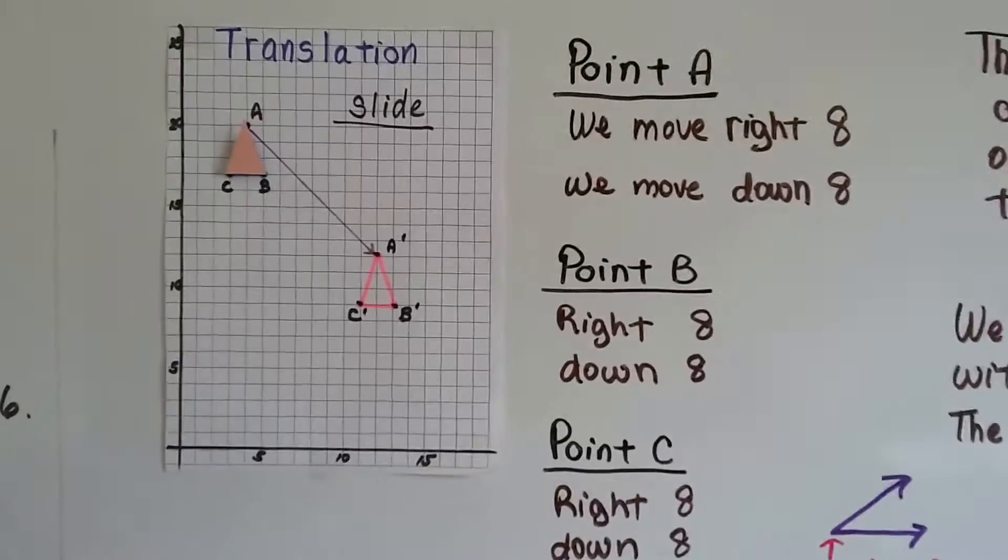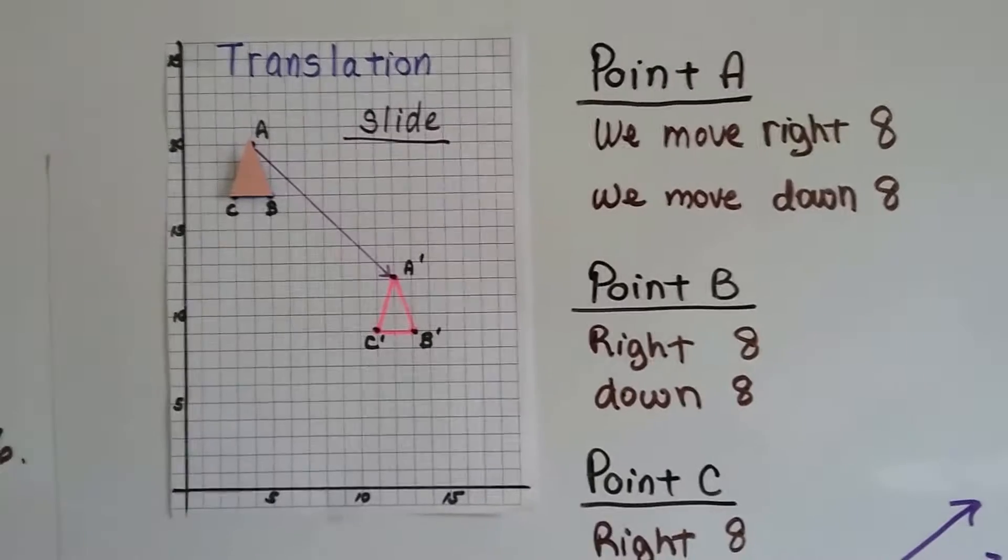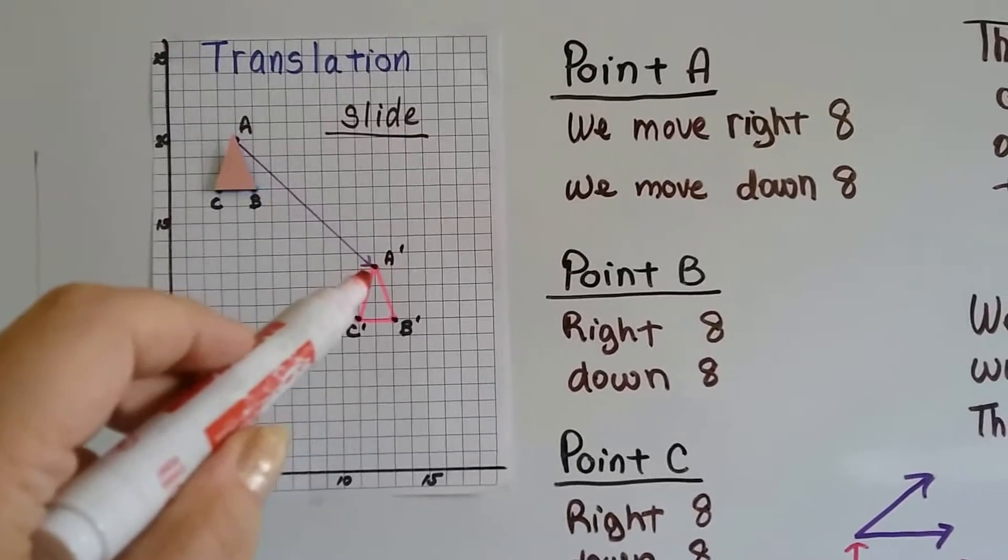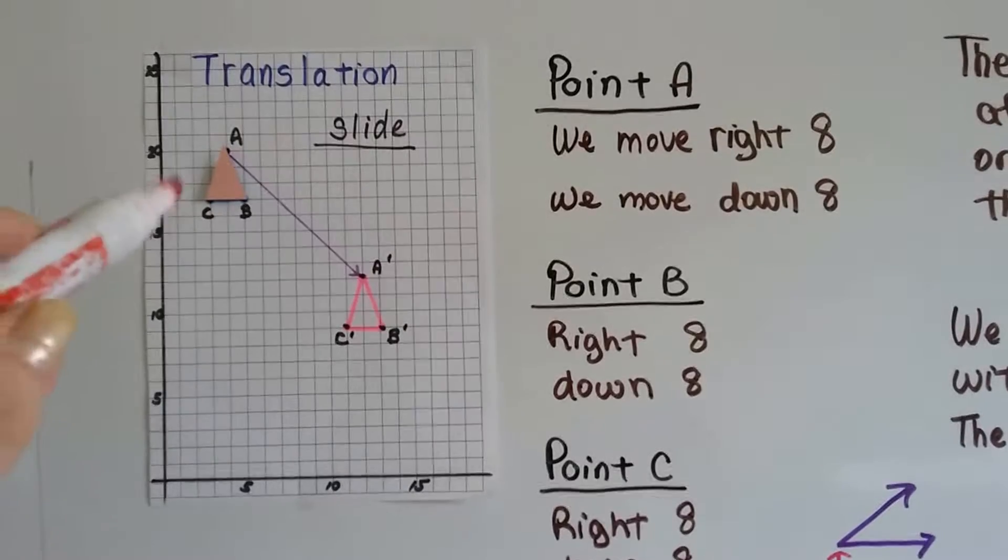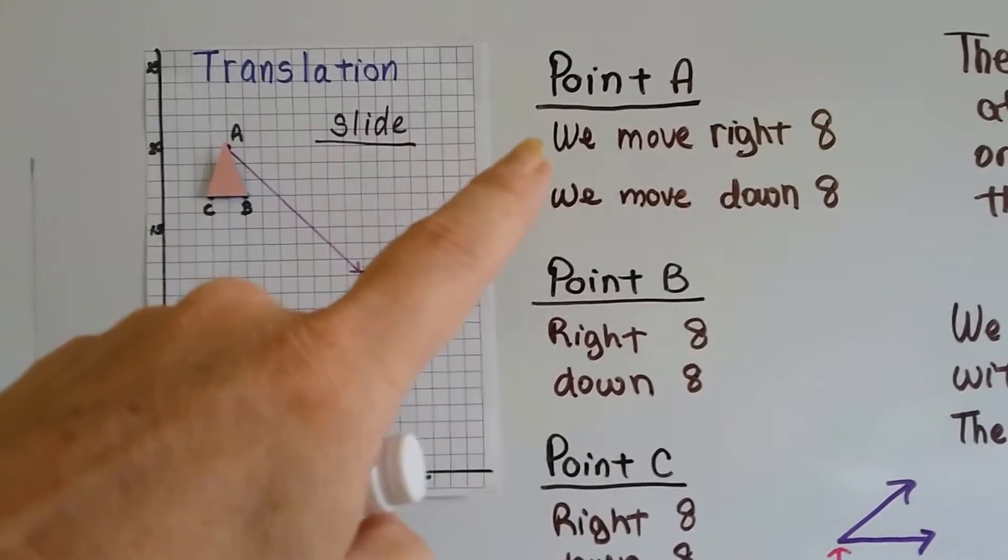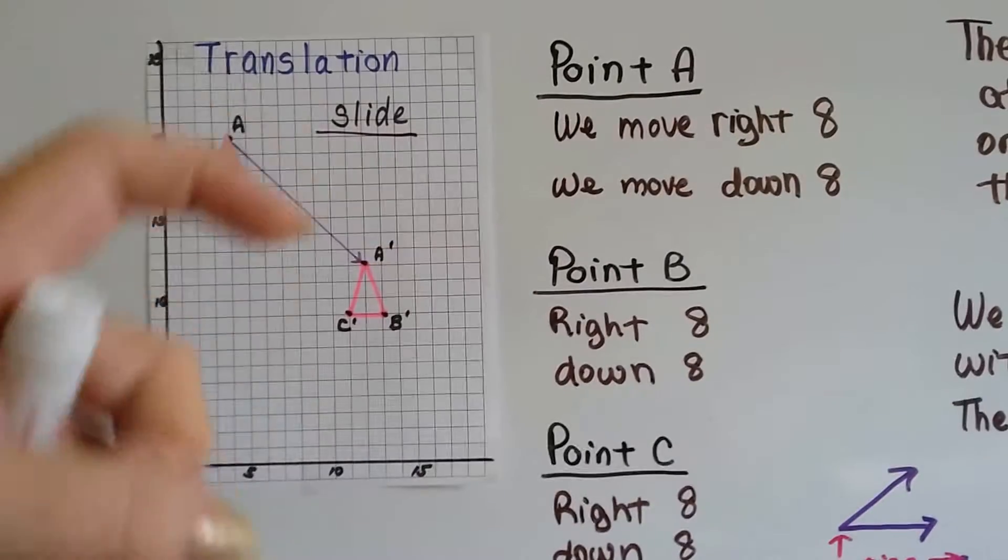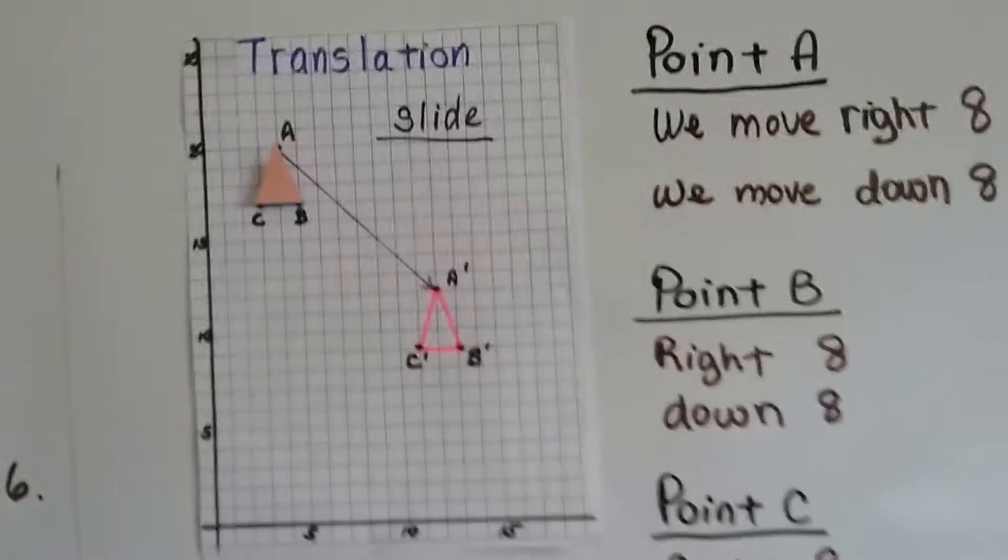So here's our first graph, and you can see we've got a triangle here and a triangle here, and I have this point A connected to this point. This is called A prime. I'll explain that in a second. But for point A, if we move it right to the 8, 8 spaces, and if we move down 8 spaces, we'll be at A prime.